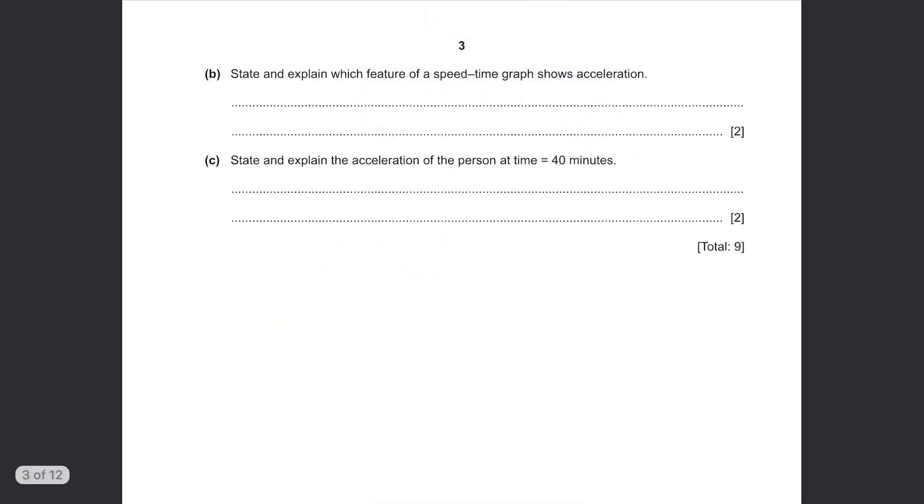Part B. State and explain which features of a speed-time graph show acceleration. There are two parts in this question. You first need to state what it is and explain why it is so. In a speed-time graph, the gradient represents acceleration. This is because when you calculate the gradient, you are dividing speed with time and speed divided by time is acceleration.